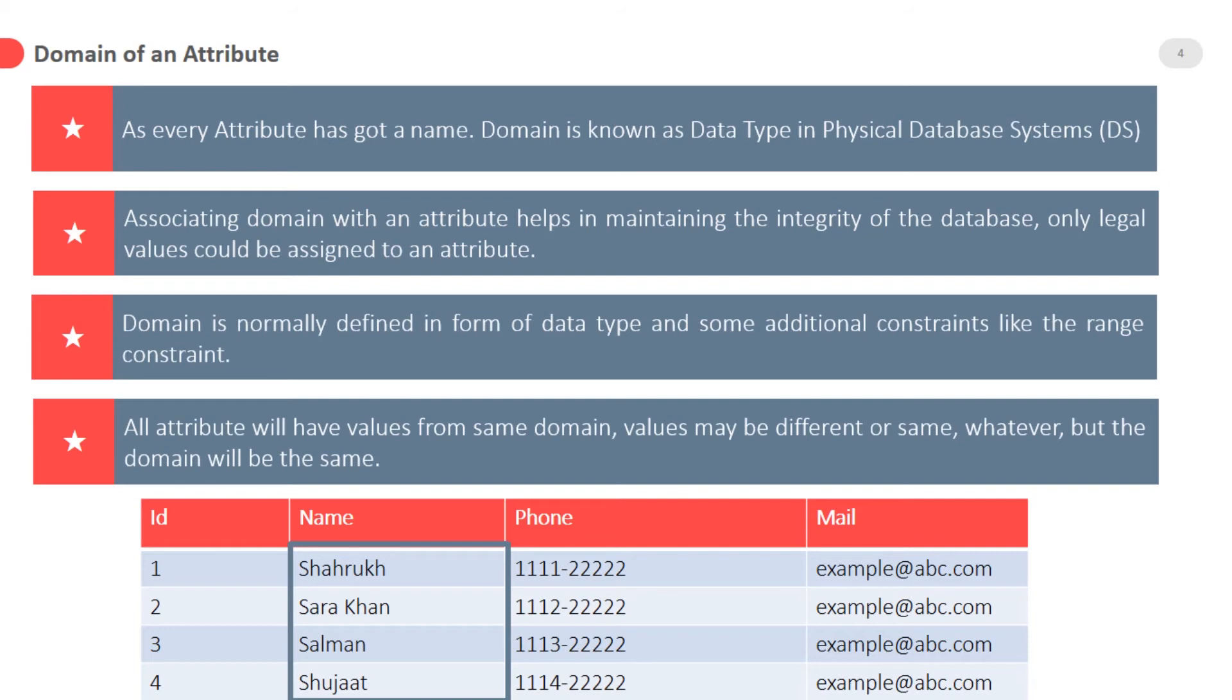Values may be different or same, but the domain will be the same. For example, if we define the salary attribute of employee entity type to hold the salary of employees, the value assigned to this attribute should be numeric.